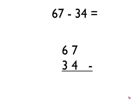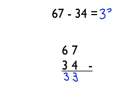Once you get to this point you just do the subtraction that you see in each column. We'll start on the right hand side. Seven take away four is three. And then the next column, six take away three is three. So our answer is 33.